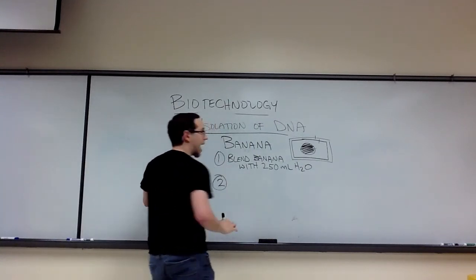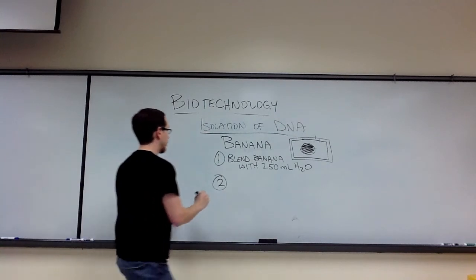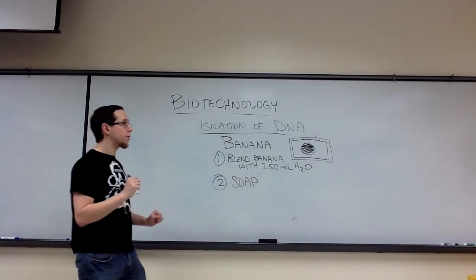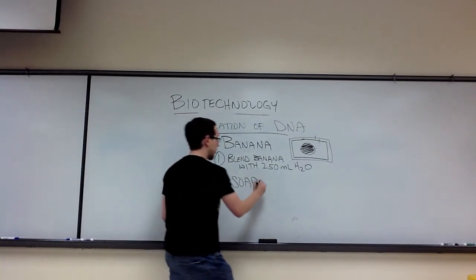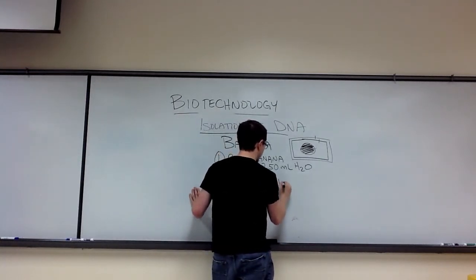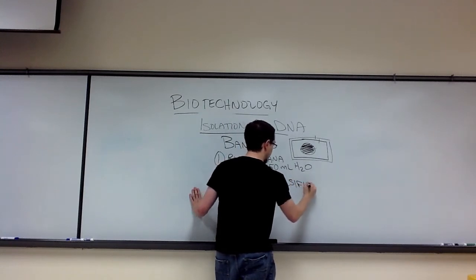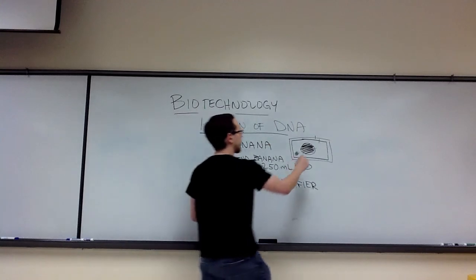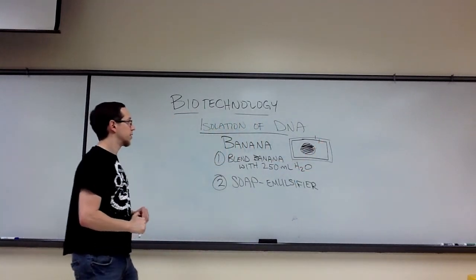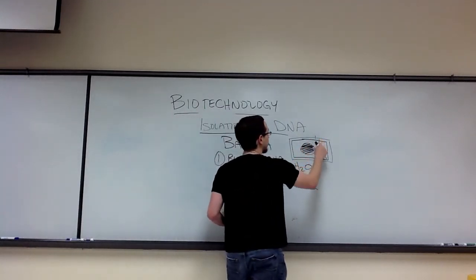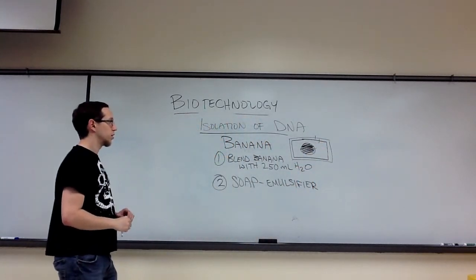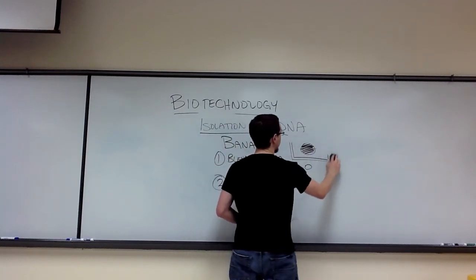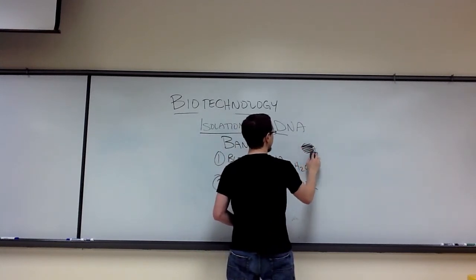After we have blended the banana, we're going to add two other solutions to it. The first solution that we're going to add is soap. Recall from the macromolecule unit that soap is an emulsifier. We're going to use this soap to disrupt any lipids that exist in any of these structures. So by doing that, in theory, we can disrupt these structures using that soap and then get to the DNA.